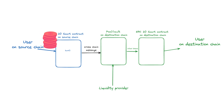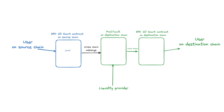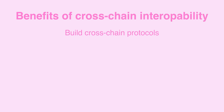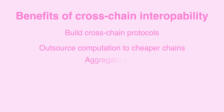Finally, we have burn and unlock bridges. This is like the reverse of a lock and mint bridge. Here, tokens are burned on the source chain — where the source chain is the non-issuing blockchain for these tokens, some kind of wrapped tokens — and an equivalent amount is issued from the vault on the destination chain, which is the issuing blockchain. With this ability to send data and assets cross-chain, you can build cross-chain protocols like DeFi applications, outsource computation to cheaper chains, aggregate cross-chain yield, and create cross-chain NFTs.